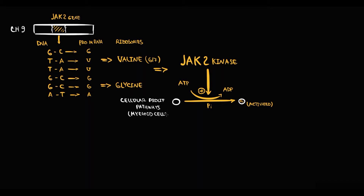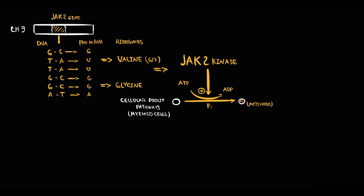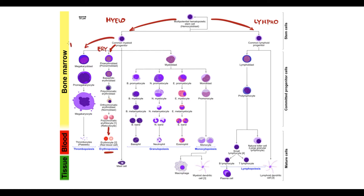To explain what myeloid cells are, we have to know that hematopoiesis can be subdivided into myelopoiesis and lymphopoiesis. Myelopoiesis can be subdivided into erythropoiesis, which produces red blood cells; thrombopoiesis, which produces megakaryocytes from which platelets are formed; monocytopoiesis, which produces monocytes; and granulocytopoiesis, which produces neutrophils, basophils, and eosinophils.